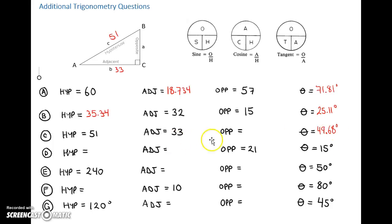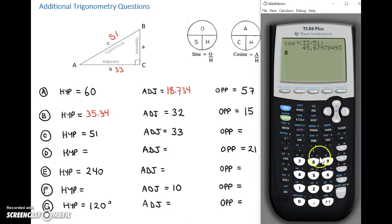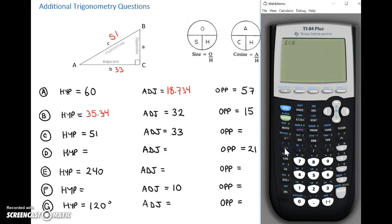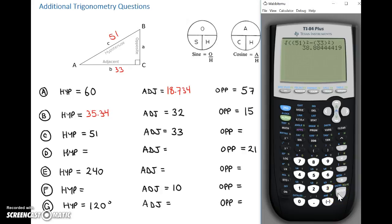Now we need the opposite. We have the larger area — 51 squared — minus the smaller area — 33 squared — and that will give us the opposite value. So the square root of 51 squared minus 33 squared gives us 38.88.